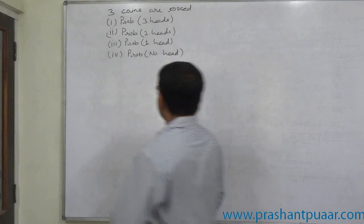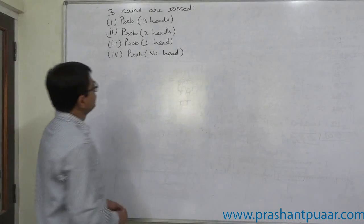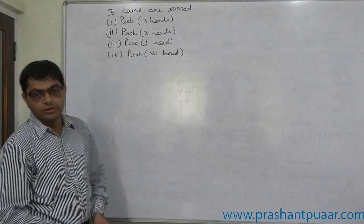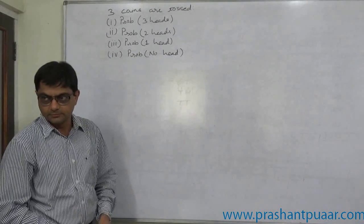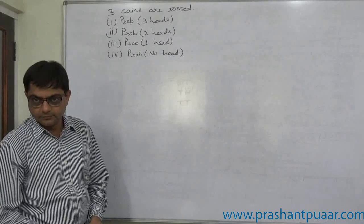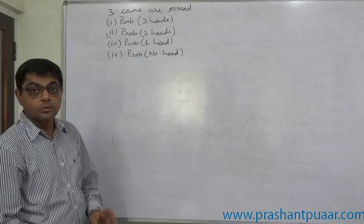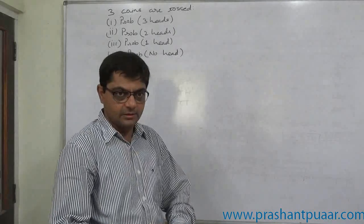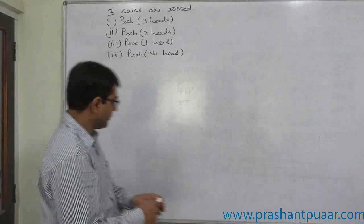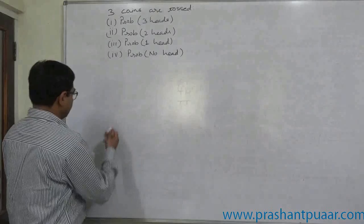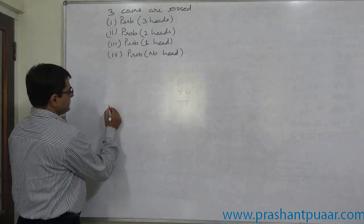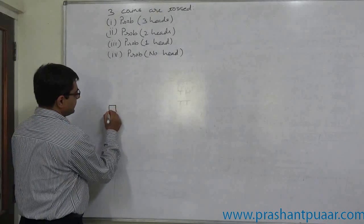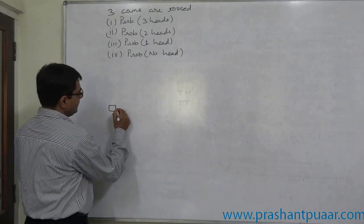Now let us take a case of tossing three coins — first coin, second coin, third coin. The experiment can be explained in this way.